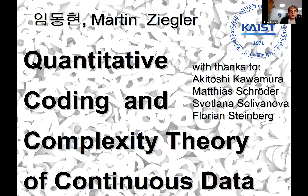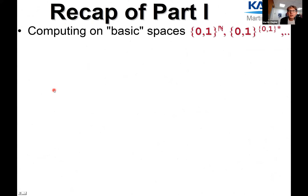In the first part we talked about computing on so-called basic spaces — that is on Cantor space and on this kind of Baire space, which is just Cantor space but with the elements of the sequence now indexed by finite binary strings rather than by natural numbers.